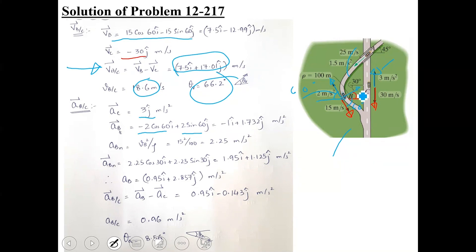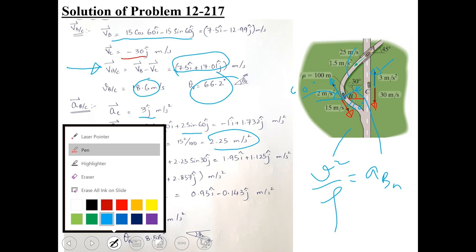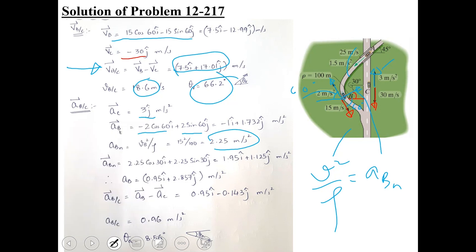The normal component of acceleration is directed toward the center of curvature. Its magnitude is v squared over rho — v is 15 meters per second and rho is 100 meters, giving a magnitude of 2.25 meters per second squared. This vector lies in the first quadrant at 30 degrees, so aB_normal equals 2.25 cos 30 i plus 2.25 sin 30 j.